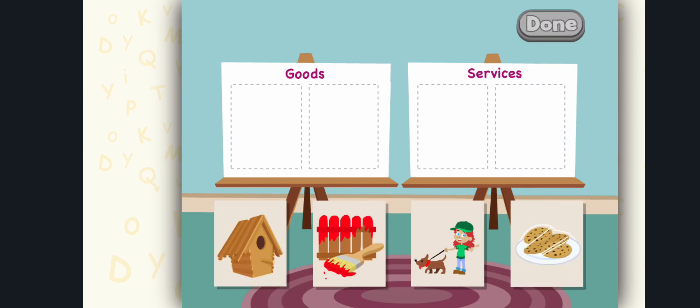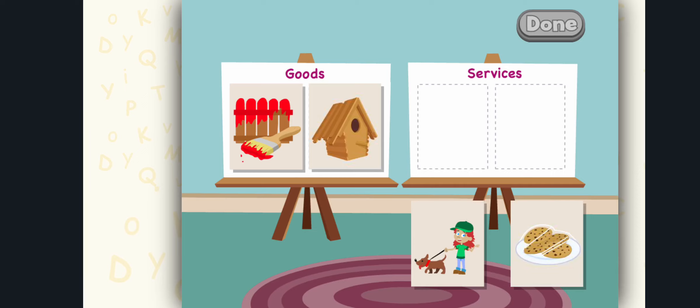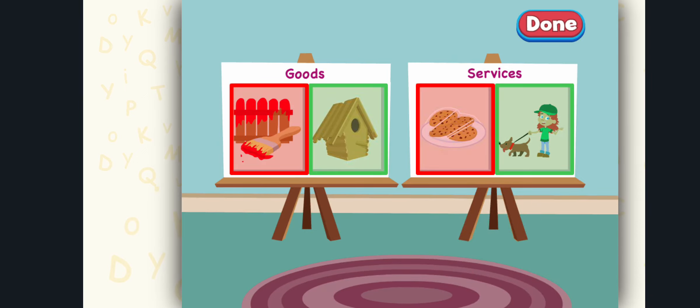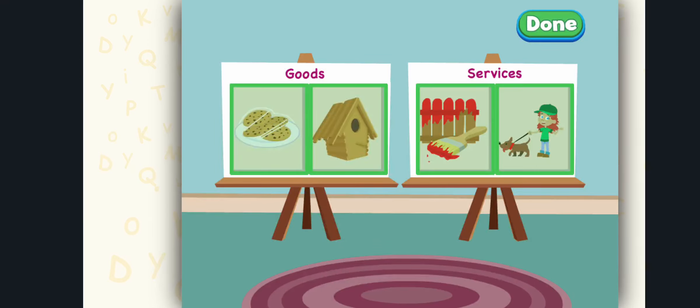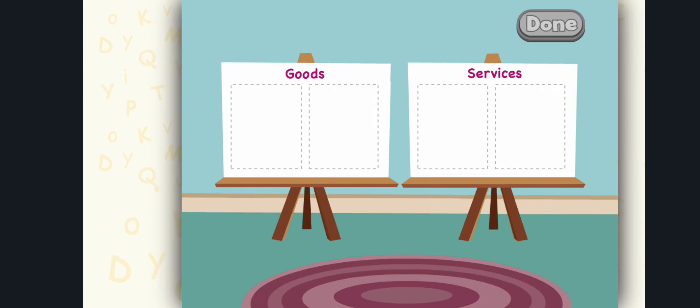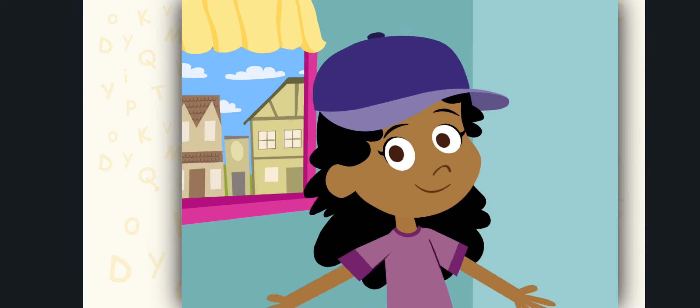Drag the goods and services to the correct places and select the done button. Birdhouse! Nice try! Cookies! Good! Great! Let's look at some more.